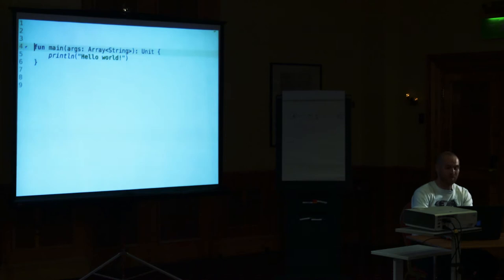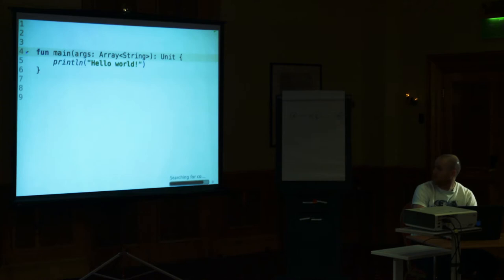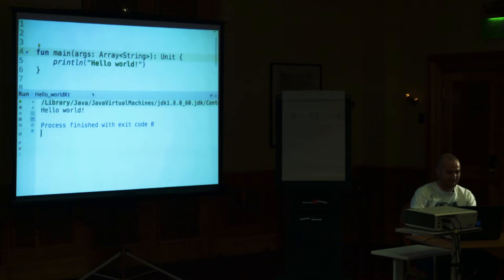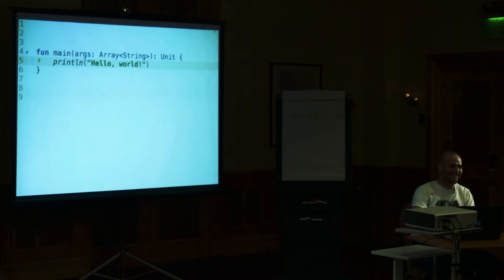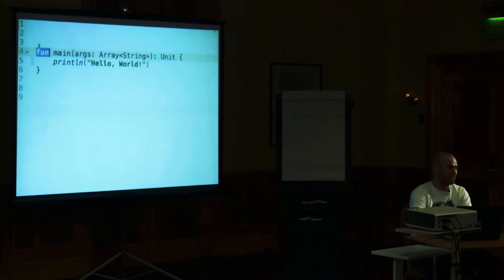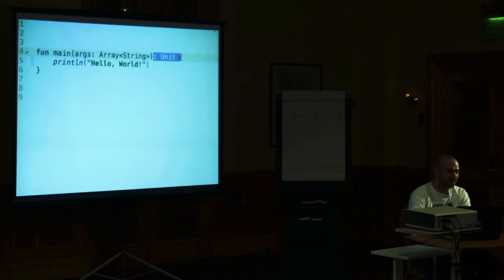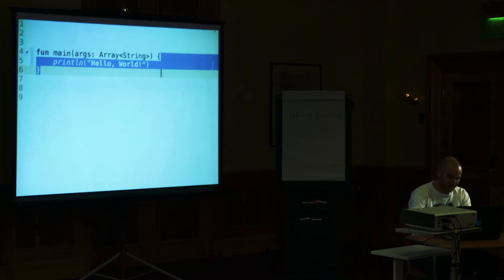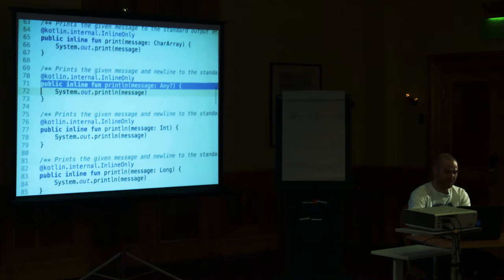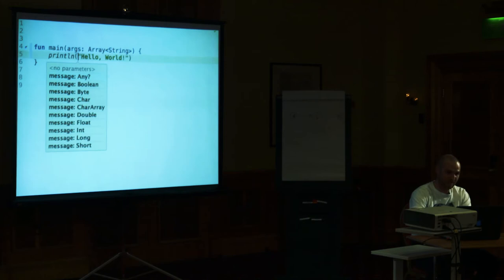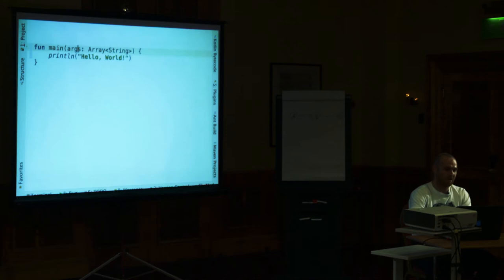This is IntelliJ IDEA in presentation mode. So as you can get, `fun` is a keyword — it means function. `main` is like the main function in C. Then you get arguments, which is an array of strings — unlike Java, you specify types after the colon. The return type of this function is `unit`, which is like `void` in Java, and it's optional so I can skip it. `println` is a function which is just `System.out.println`.